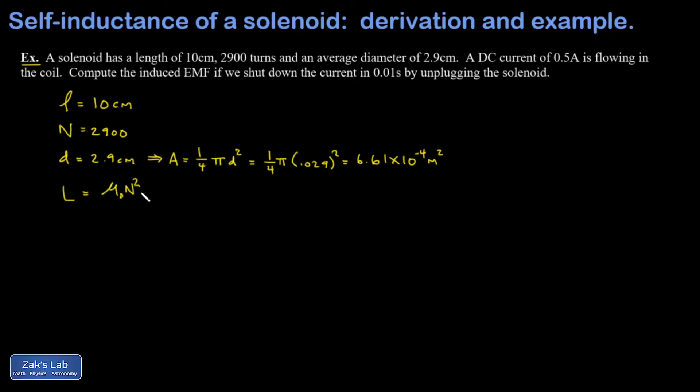That's mu naught n squared A over L. I'll crunch those numbers and I get a self-inductance of 0.0699 Henrys. You would normally express that in millihenries as 69.9 millihenries.